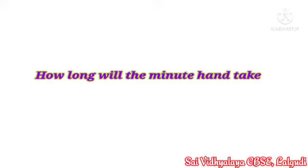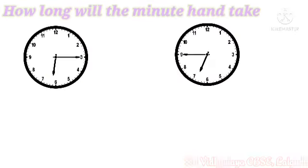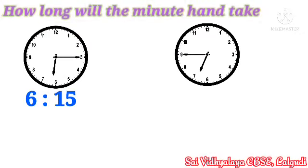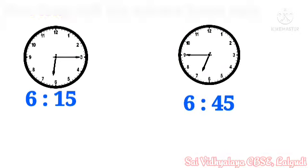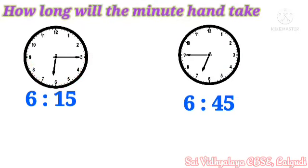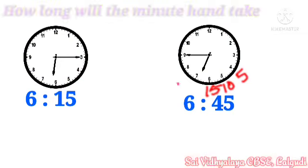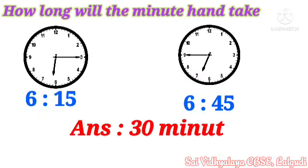How long will the minute hand take? Look at these two clocks. In the first clock, the time is 6:15. And in the second clock, the time is 6:45. We have to find out how many minutes the minute hand takes to move from 6:15 to 6:45. Shall we count? 5, 10, 15, 20, 25, 30. So the answer is 30 minutes.